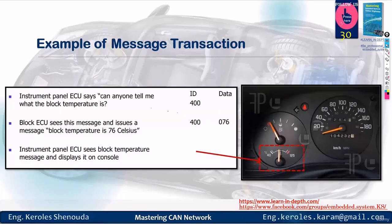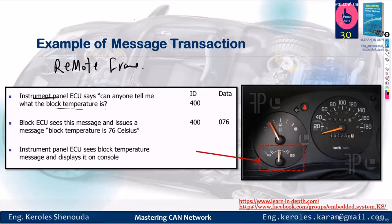Let's take an example. I have the instrument panel ECU — the ACU for the meter. Can anyone tell me what the block temperature is? There is a type of frame called the remote frame. I have ECU2 for temperature, and ECU1 for the instrument panel related to the meter. ECU2 for temperature should send with ID 400.